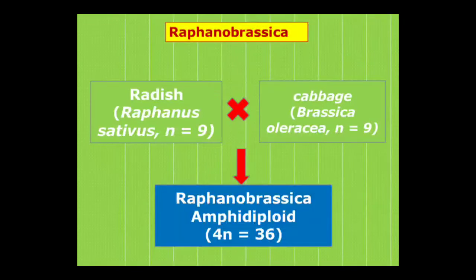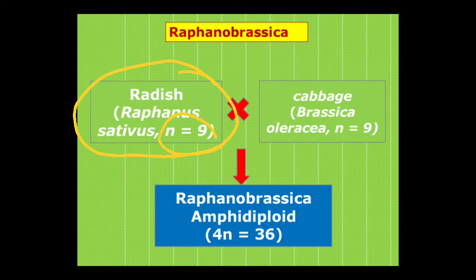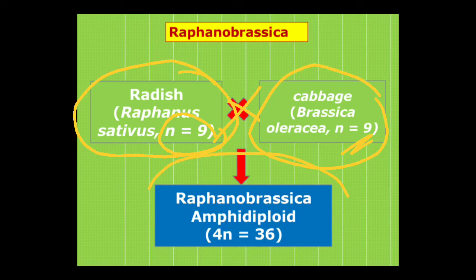What is the process of polyploidy in Raphano brassica? Radish, that is Raphanus sativus with N=9 chromosomes, and cabbage, Brassica oleracea, also with N=9 chromosomes, are crossbred. The result is Raphano brassica, an amphidiploid where 4N equals 36.